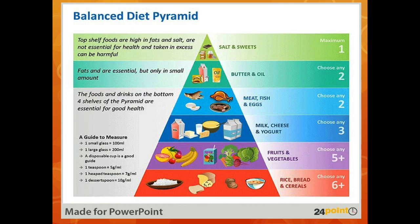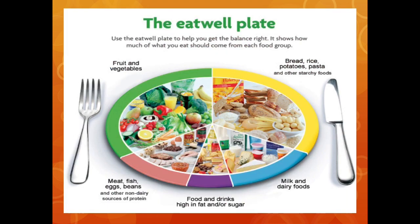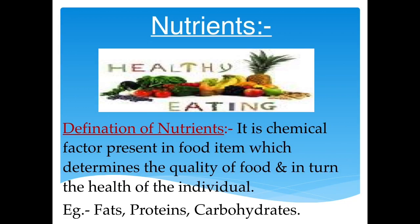As you can see in the image: more rice and alternatives, then fruits and vegetables, then meat and alternatives, and then small amounts of salt, sugar, or fats. Similarly, you can see in the Eat Well Plate. Nutrients are the chemical factors present in food items which determine the quality of food and in turn the health of the individual.